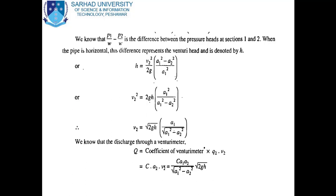The term p1/ω − p2/ω represents the difference in pressure head between sections 1 and 2. When the pipe is horizontal, this difference represents the venturi head, denoted by H. Replacing p1/ω − p2/ω with H, we get: H = v2²/2g · (a1² − a2²)/a1². Rearranging and taking the square root: v2 = √(2gH) · a1 / √(a1² − a2²).